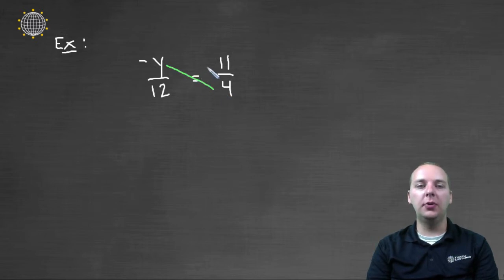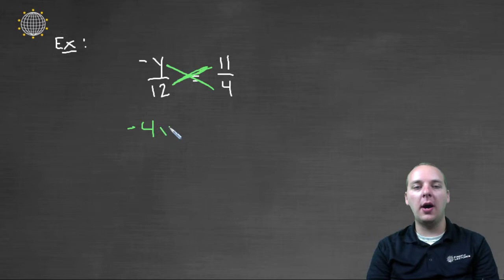And that would be equal to the denominator from the left times the numerator on the right. It looks like you're literally crossing through the equal sign, cross multiplication. So we'll take negative four y, that's negative y times four, and set it equal to eleven times twelve. So we'll have negative four y equals one hundred and thirty two.